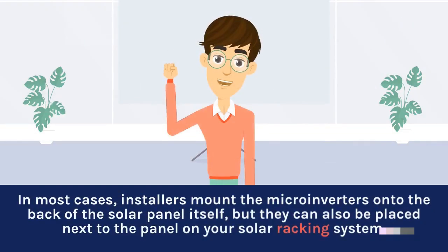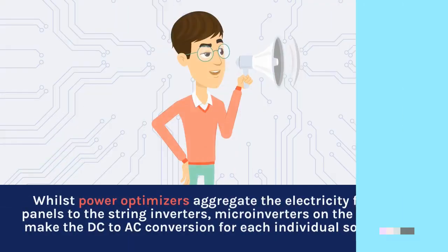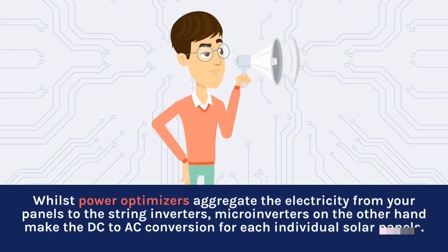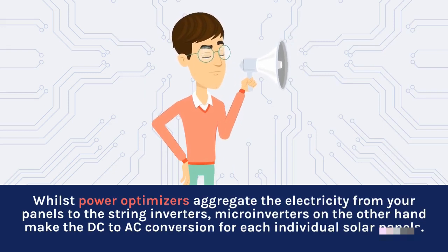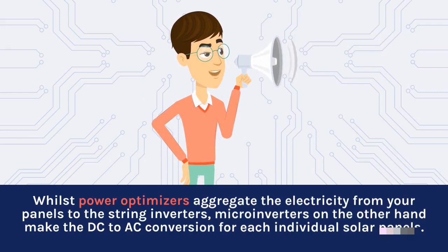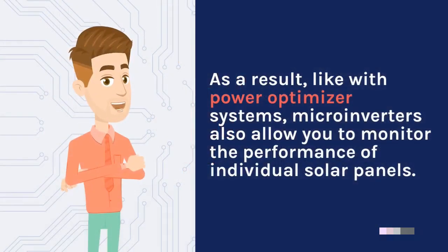In most cases, installers mount the microinverters onto the back of the solar panel itself, but they can also be placed next to the panel on your solar racking system. Whilst power optimizers aggregate the electricity from your panels to the string inverters, microinverters make the DC to AC conversion for each individual solar panel. As a result, like with power optimizer systems, microinverters also allow you to monitor the performance of individual solar panels.